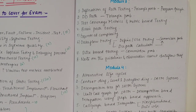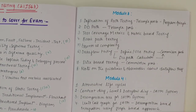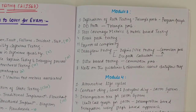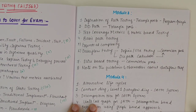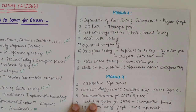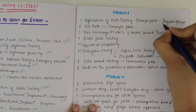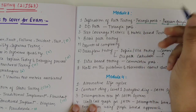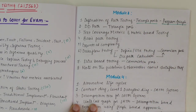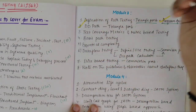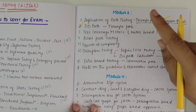Let's move on to the third module. We have certain fixed topics here. Firstly, we have the definition of path testing. In path testing, we look at the program graph, and within that, the triangle problem. Either the triangle problem in a program graph or the triangle problem in DD path — one of these two would be asked.